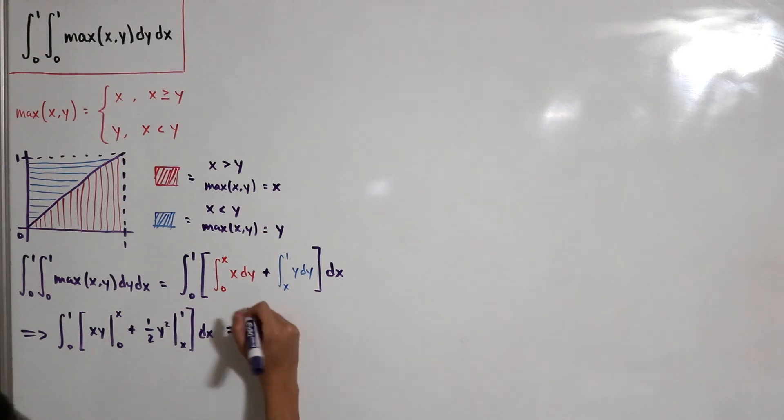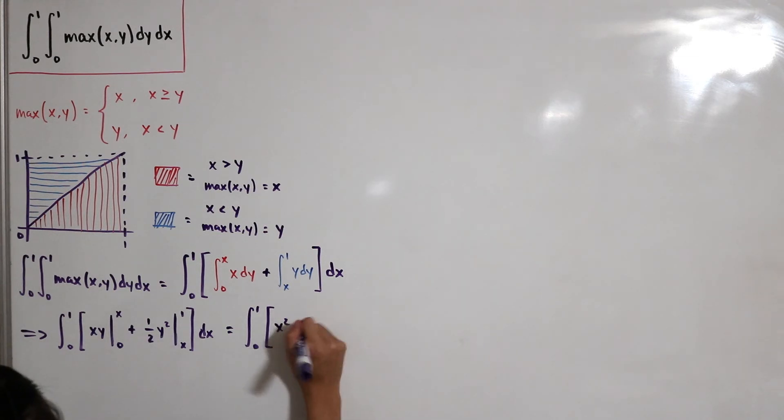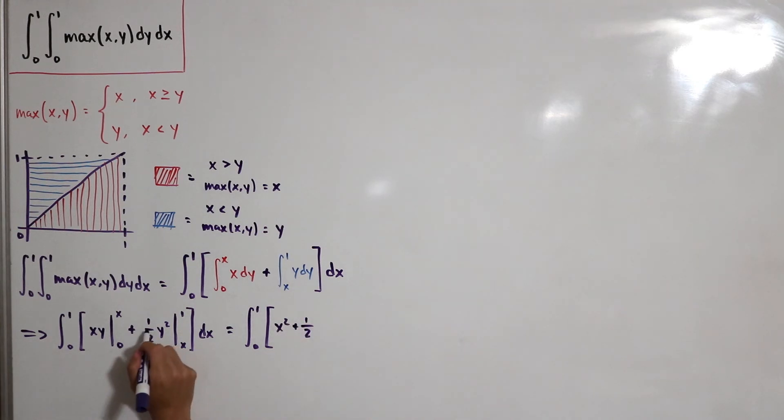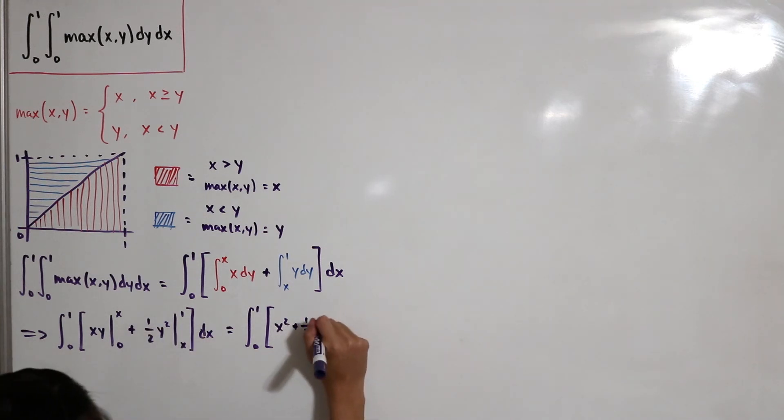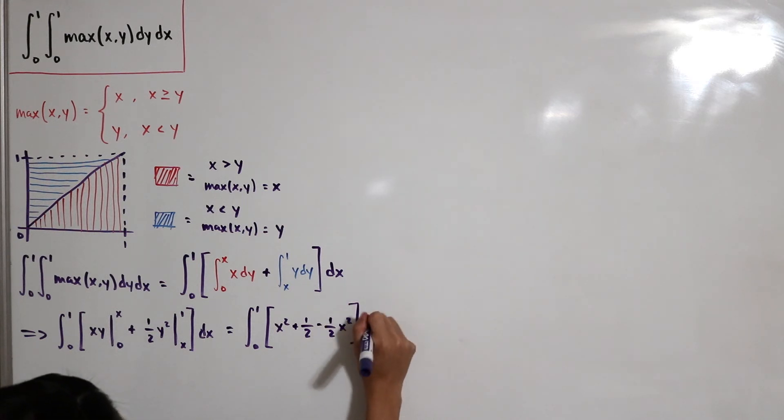Now that's easy to show. I'm going to skip the calculations. Over here we would have x. Over here we would have x squared. Then from here, this is x, so one half plus one half, and then subtract that with x. So that's minus one half x squared dx.